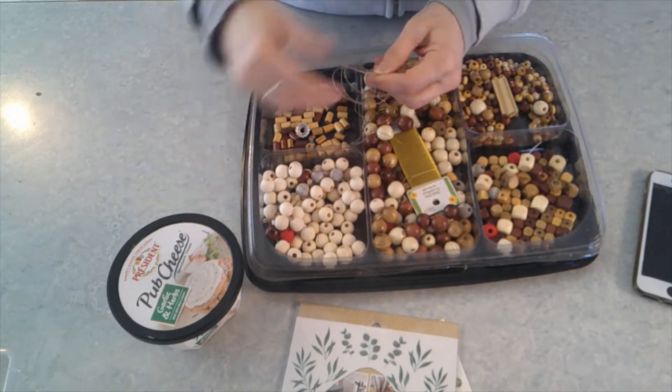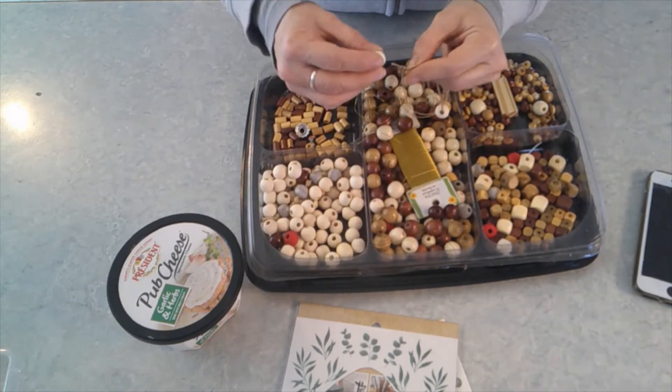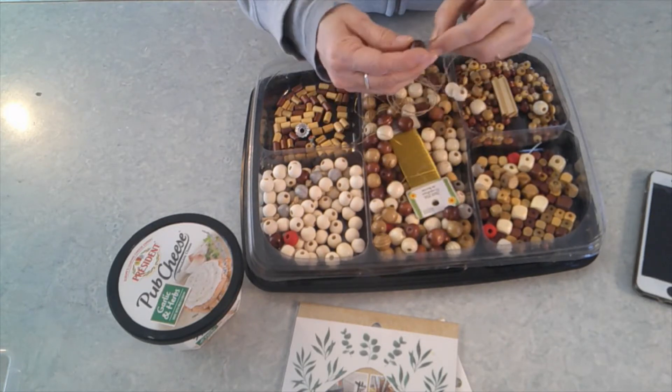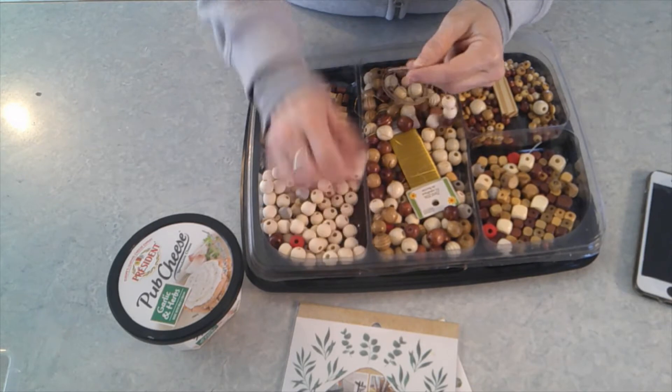The next thing I did was string some beads on a piece of jute twine in a pattern and a size that I was happy with. I went with wood neutral colors. You could use any colors you want. I know that they have colored beads at Dollar Tree or you could paint them.